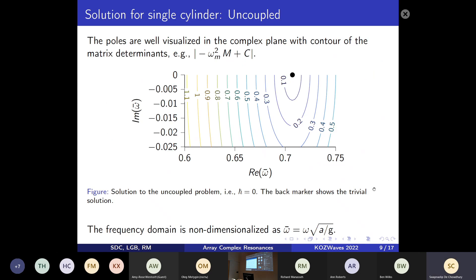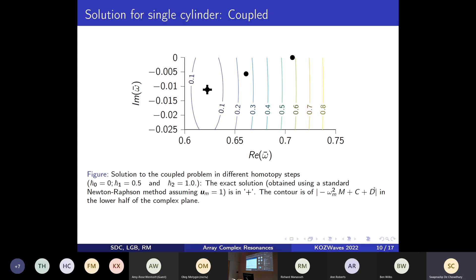The first simplest test case to test the new method based on homotopy is the single cylinder case. If we do not consider the complex wave forcing matrix D in this equation of resonance, we have to solve this uncoupled problem. There, the solution for the complex frequency is solely on the real axis. That is the solution we get from the homotopy setting at the first homotopy step by setting the h-bar value as zero. But when we consider the coupling matrix D, we can clearly see that the pole has now shifted to a new location inside the complex plane.